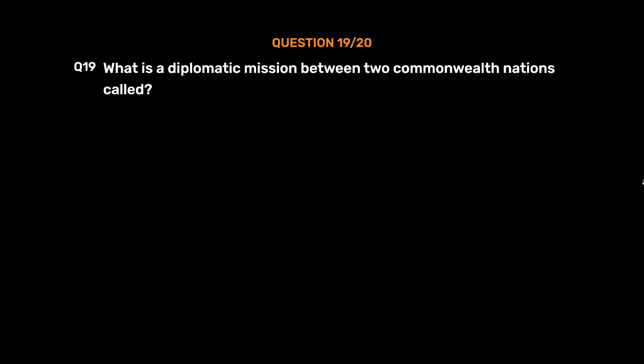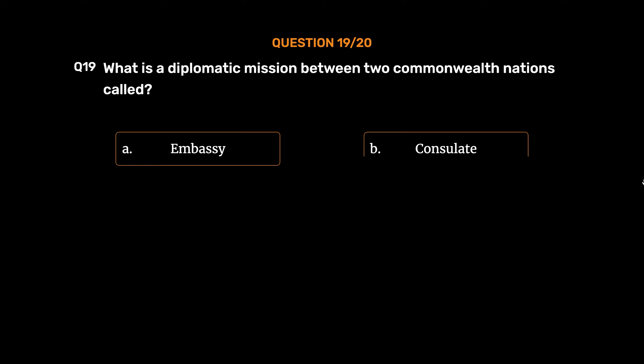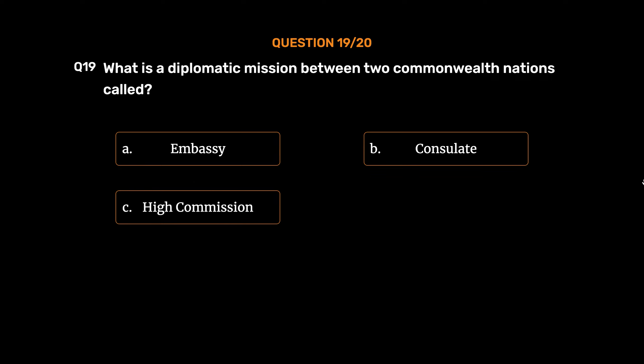Question No. 19: What is a diplomatic mission between two Commonwealth nations called? Option A: Embassy. Option B: Consulate. Option C: High Commission. Option D: Permanent Mission. The correct answer is Option C: High Commission.